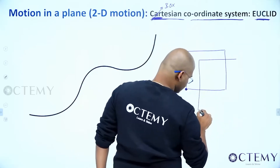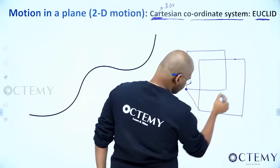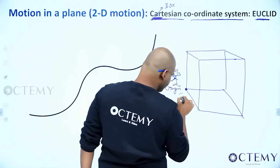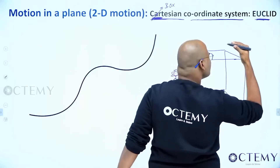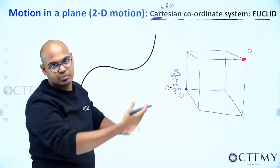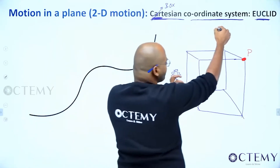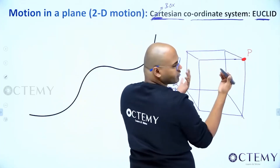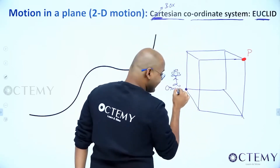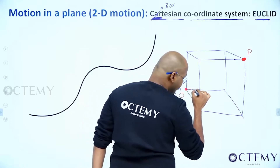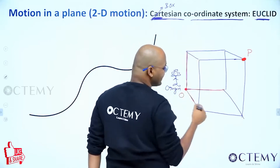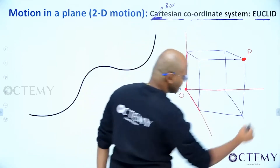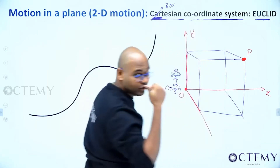Let's say this is my origin where I am sitting. I want to represent some random point P, and I construct a box such that P is at the diagonally opposite corner. Now, wherever you are sitting, at that corner there are three edges passing through it. He called those three edges three mutually perpendicular axes.